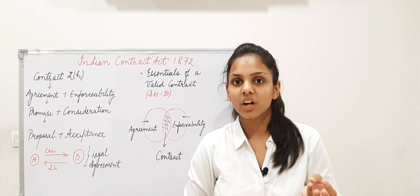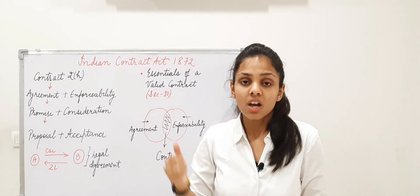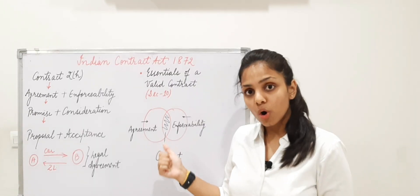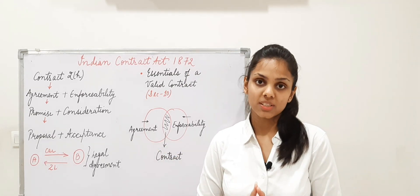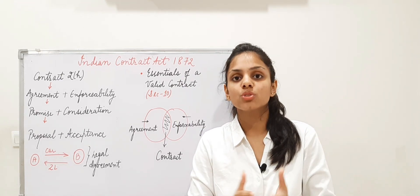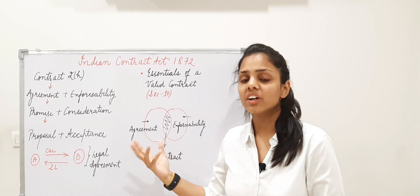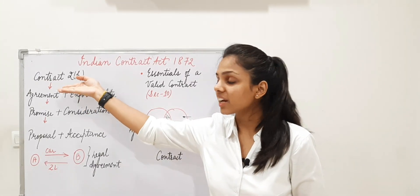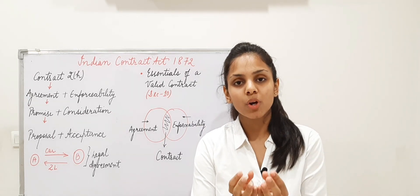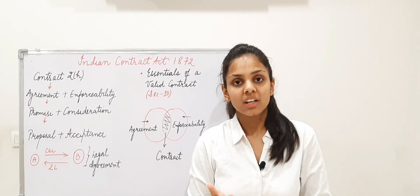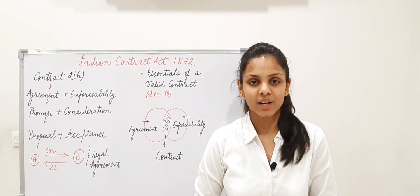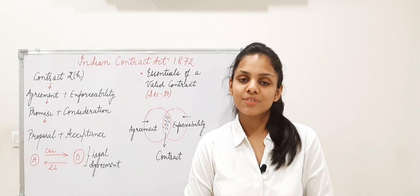So we have discussed what is a contract, what are the various essential elements of a valid contract, and an important point to note: all agreements are not contracts, but all contracts are agreements. Not all agreements have legal enforceability — no legal rights and obligations arise — but every contract is an agreement because the definition under Section 2(h) says agreements enforceable by law are contracts. Thank you so much. Keep learning. Stay safe. Bye.